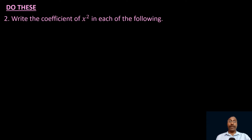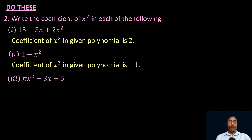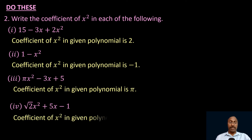Write the coefficient of x square in each of the following. First: 15 minus 3x plus 2x square — the coefficient of x square is 2. Second: 1 minus x square — the coefficient of x square is minus 1. Third: πx square minus 3x plus 5 — the coefficient of x square is π. Fourth: √2·x square plus 5x minus 1 — the coefficient of x square is √2.